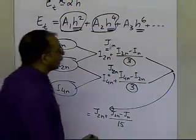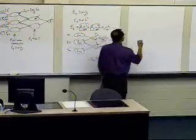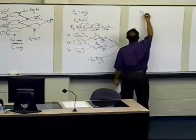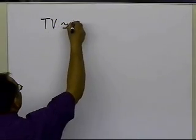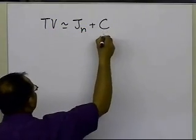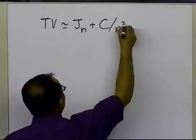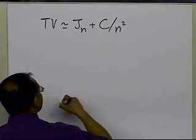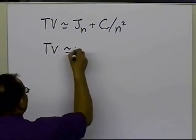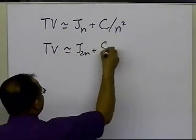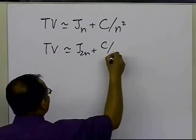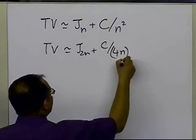How do we get this 15 here? Let's go ahead and look at it. Basically, the true value is approximately equal to jn plus c divided by n squared, and the true value will also be approximately equal to j2n plus c divided by 4n squared.